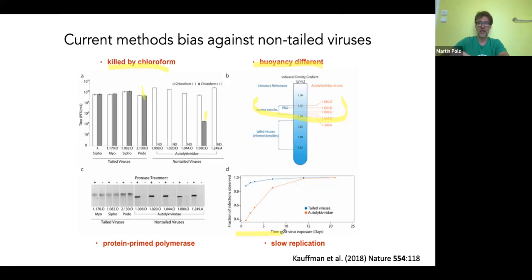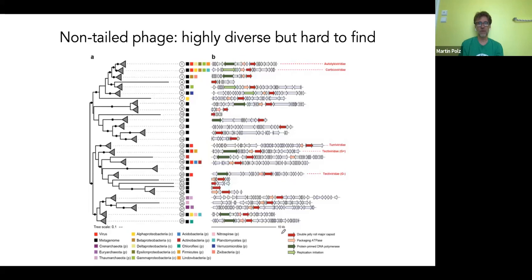This is an important lesson about how our methods determine the window we have on diversity in the environment — we often overlook important community members because of methodological biases. When we looked more carefully using iterative searches, we did find a bunch of these viruses, indicating they're quite diverse. We found prophage versions, detected them in some metagenomes, and also in putatively infected microbial cells.